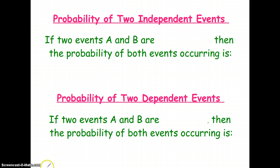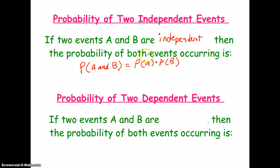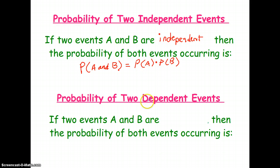So if two events A and B are independent, then the probability of both events occurring is the probability of the first event times the probability of the second event. You saw this when we were looking at the fundamental counting principle and how we would multiply things together. Now we're doing it with probabilities. So for independent probabilities, the probability of A and B equals the two probabilities multiplied together.